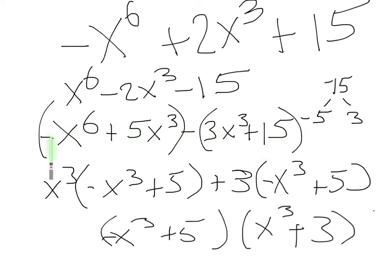And then we found a common factor in this one is x cubed. And then when you take it out of that, you get negative x to the 3rd plus 5. And then here, the same thing. We took out 3. We got negative x to the 3rd plus 5. And then we just rewrote it. So we got this one here. Here. And then x to the 3rd plus 3 right here.